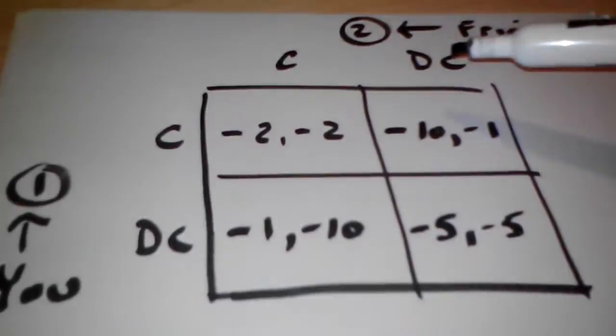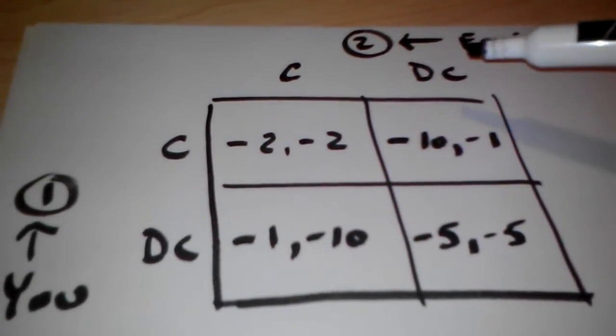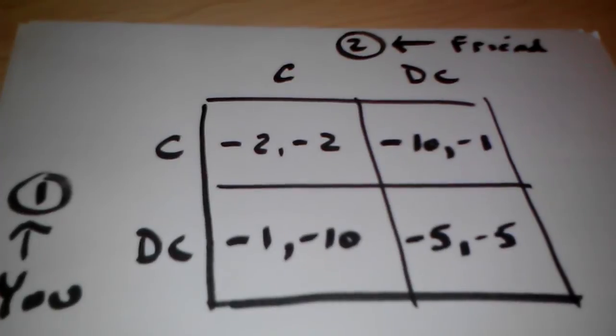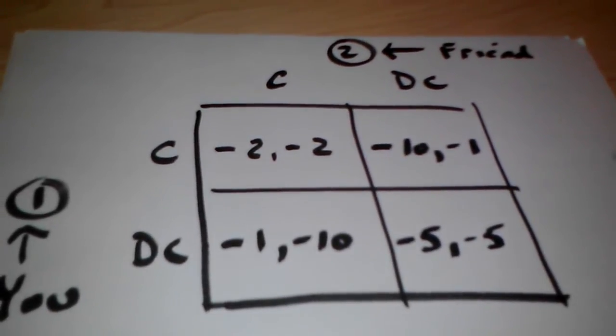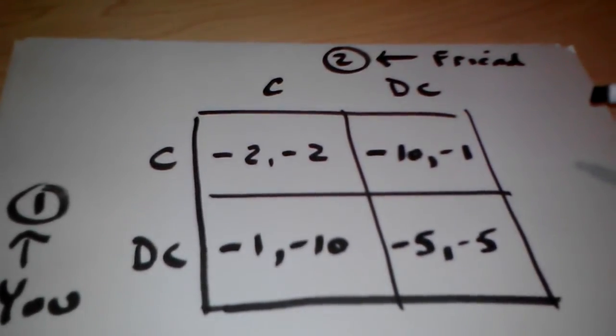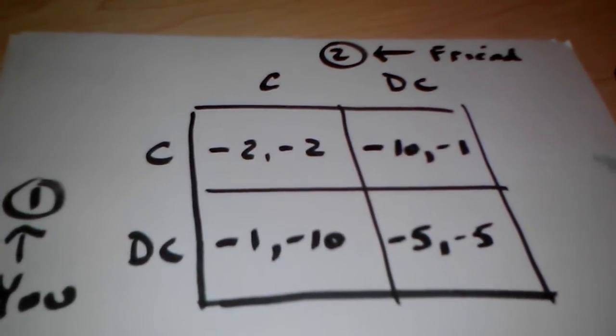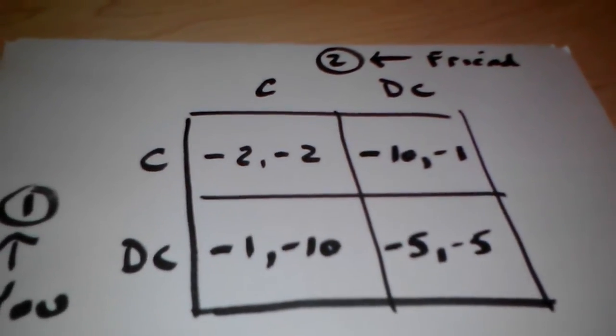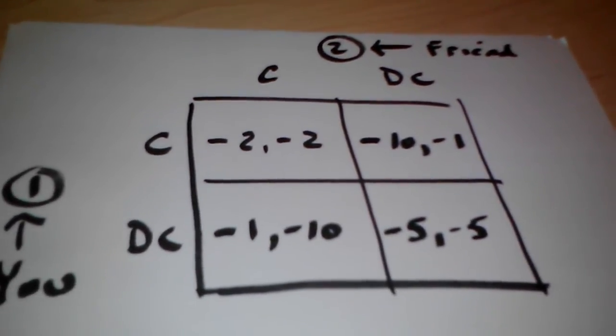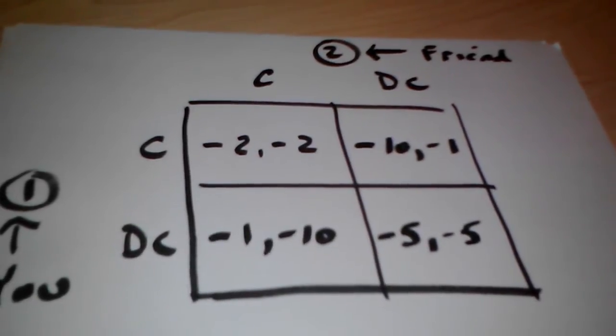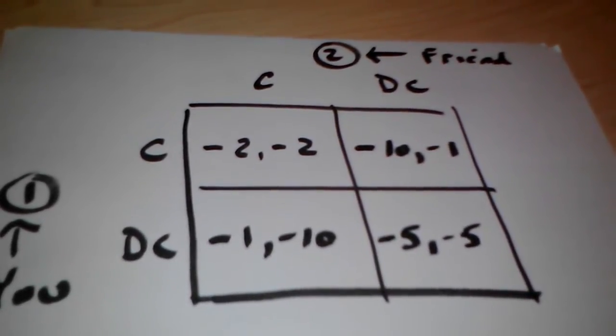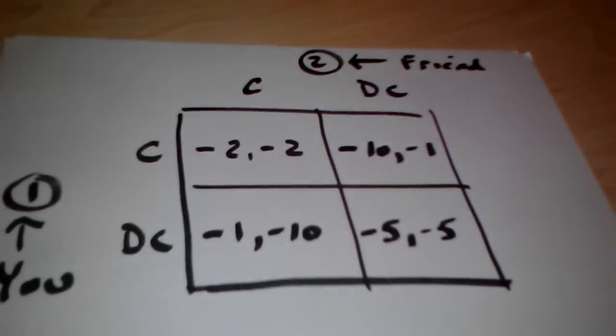And you have two decisions. Each player has two decisions, C or DC. And C is cooperate, DC is don't cooperate. And then, of course, you have four boxes in the matrix, and each of those corresponds to a joint decision between you and the friend. And the payoffs are negative because in this game, prison time is obviously seen as a negative.